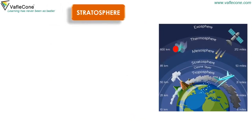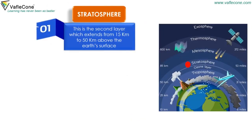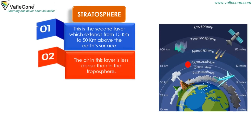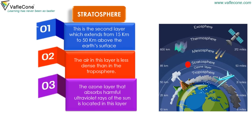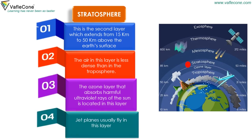Stratosphere is the second layer, which extends from 15 kilometers to 50 kilometers above the earth's surface. The air in this layer is less dense than in the troposphere. The ozone layer, which absorbs harmful ultraviolet rays of the sun, is located in this layer. Jet planes usually fly in this layer.